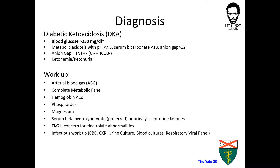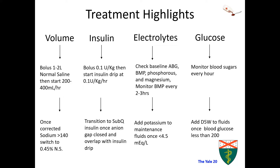The treatment of DKA is complex, and most institutions have algorithms in place to help describe treatment guidelines. The foundations of treatment are volume repletion, insulin, and correcting electrolyte abnormalities. Many patients with DKA are severely dehydrated and often require large amounts of fluids to recover. Patients should be volume resuscitated with a bolus of 1–2 liters of isotonic fluid and then started on maintenance fluids at a rate of around 200–400 milliliters per hour. Once a patient's blood sugar is less than 200, glucose in the form of D5W should be added to the maintenance fluids.